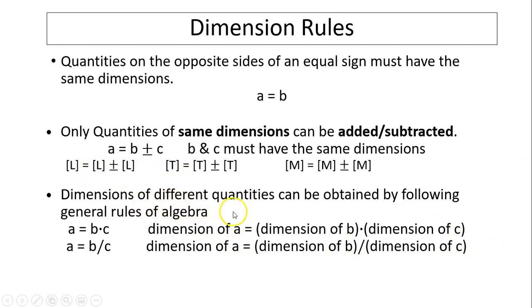Dimensions of different quantities can be obtained by following general rules of algebra. If quantity A equals B times C, then the dimension of A is dimension of B multiplied by dimension of C. If A equals B divided by C, then the dimension of A is dimension of B divided by dimension of C.